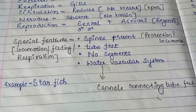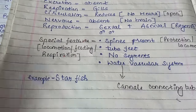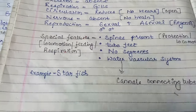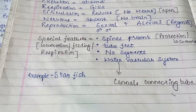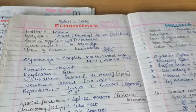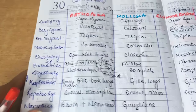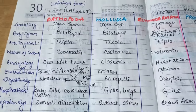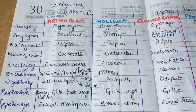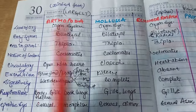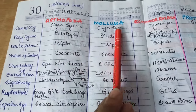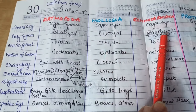The most common example is starfish. So that is all about phylum Echinodermata. Now let's come to their tabular representation comparing Arthropoda, Mollusca, and Echinodermata.